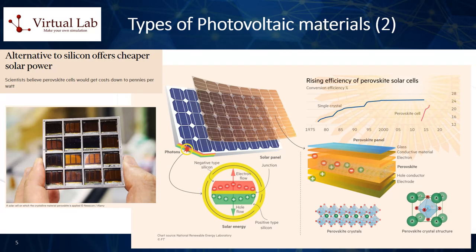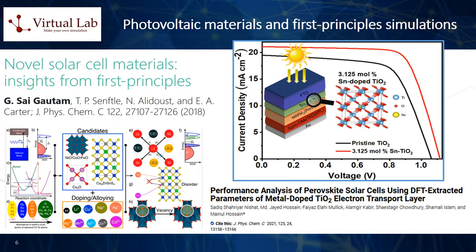Five: organic photovoltaic cells. These use organic compounds, mainly polymers, to generate electricity. They have the advantage of being flexible and potentially transparent, but they typically have lower efficiencies and shorter lifetimes compared to other materials. Photovoltaic materials are incredibly important because they allow us to harness solar energy, which is a renewable, abundant, and clean source of energy. By leveraging these materials, we can reduce our dependence on fossil fuels, which are finite and contribute to climate change.